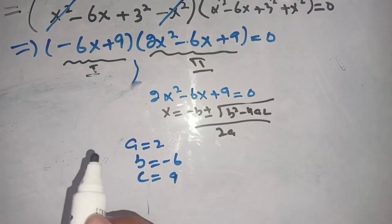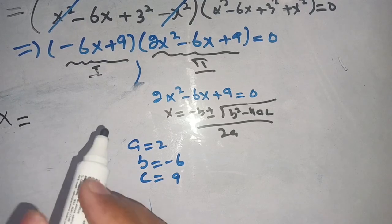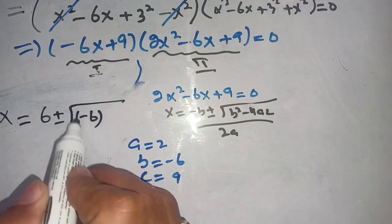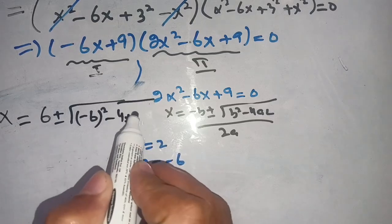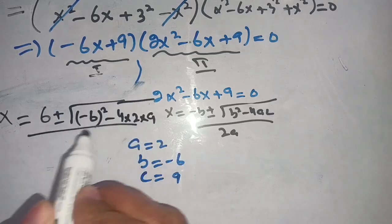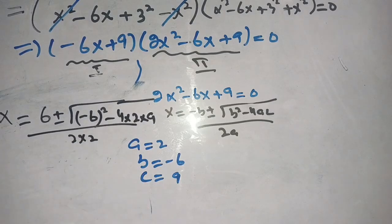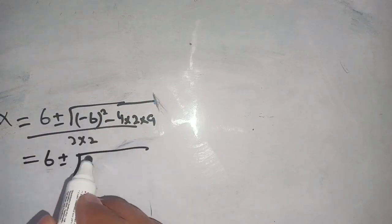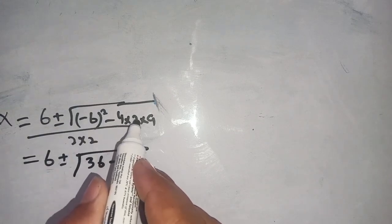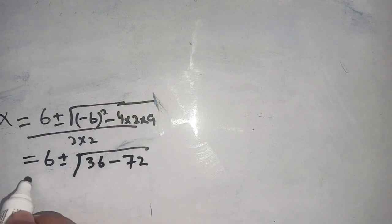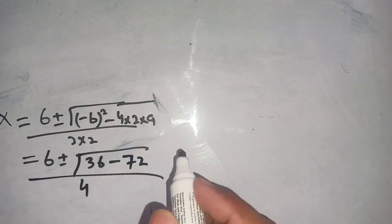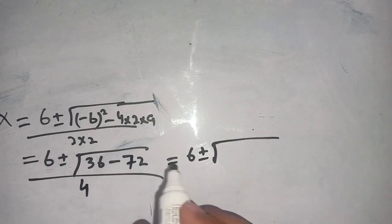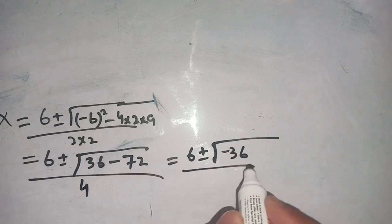Applying the formula: x equals 6 plus or minus square root of (minus 6) squared minus 4 times 2 times 9, all divided by 2 times 2. This becomes 6 plus or minus square root of 36 minus 72, divided by 4, which gives 6 plus or minus square root of minus 36, divided by 4.